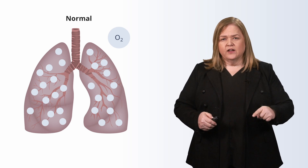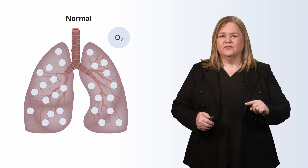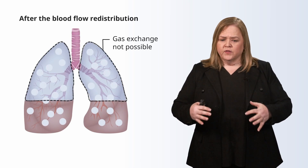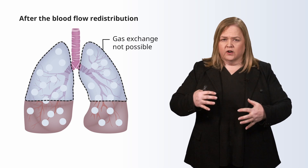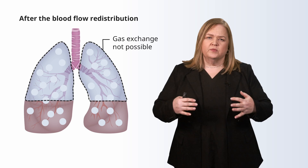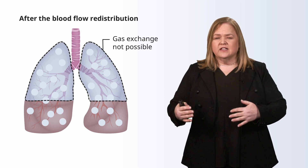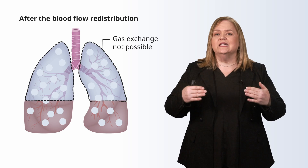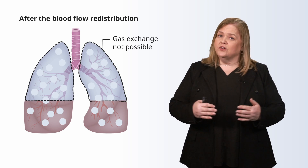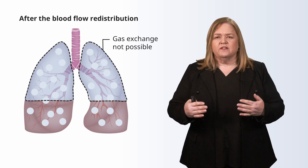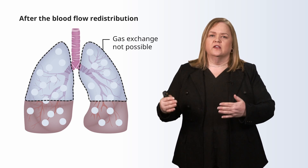Gas exchange is also impacted. Blood is being shunted to the heart and to the brain, so blood flow has been redistributed. When you have decreased blood flow to the lungs, it increases the patient's physiological dead space — no CO2 and O2 exchange occurs in those areas. Some areas of the lungs being ventilated will not be perfused because of decreased blood flow. The arterial O2 levels will decrease, and the patient will have a compensatory increase in the rate and depth of respirations — that's tachypnea.